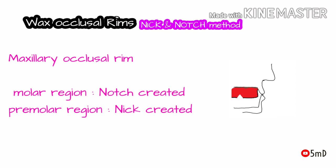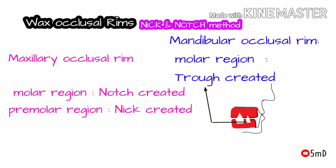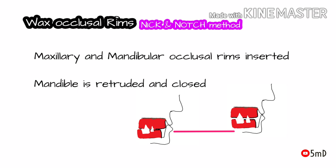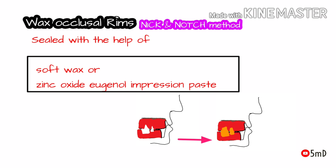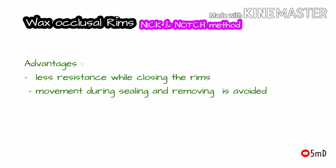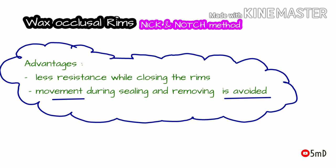In the nick and notch method, a notch is created in the molar region of the maxillary occlusal rim and a nick is created in the premolar region of the maxillary occlusal rim. In the mandibular occlusal rim molar region, a trough is created. After inserting both rims into the patient's oral cavity, the patient is asked to retract the mandible as trained. This position is then sealed with either soft wax or zinc oxide eugenol impression paste, previously loaded in the trough of the mandibular occlusal rim. After the material sets, the fixed maxillary and mandibular occlusal rims are removed together and articulated. This method is recommended because there is less resistance to closure and movement during sealing.